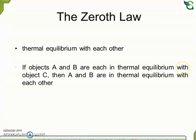So the concept of thermal equilibrium with each other involves three objects: A, B, and C. A and B are each in thermal equilibrium with object C, and therefore B is in thermal equilibrium with each other.